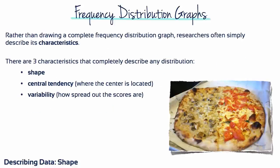Rather than drawing a complete frequency distribution graph, researchers often simply describe its characteristics. There are three characteristics that completely describe any distribution: shape, central tendency and variability.